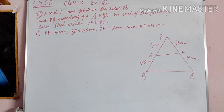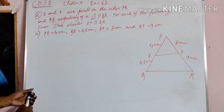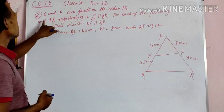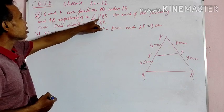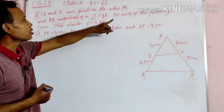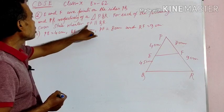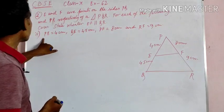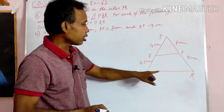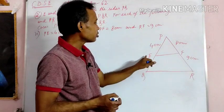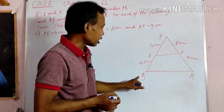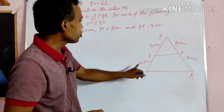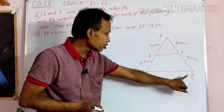CBSE Class 10, Exercise 6.2, Question 2, second case. E and F are points on the sides PQ and PR respectively of triangle PQR. For each of the following cases, state whether EF is parallel to QR or not. Here, triangle PQR has E as a point on side PQ and F as a point on side PR. You have to prove whether EF is parallel to QR.